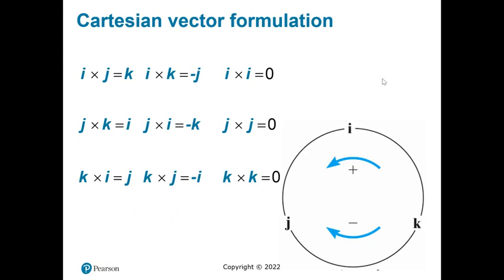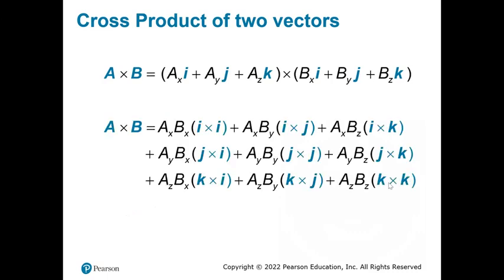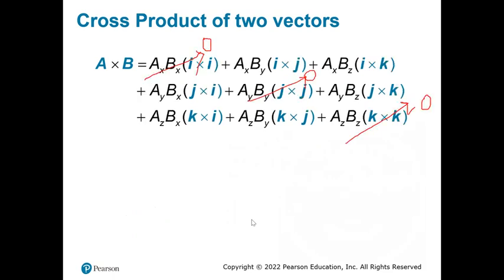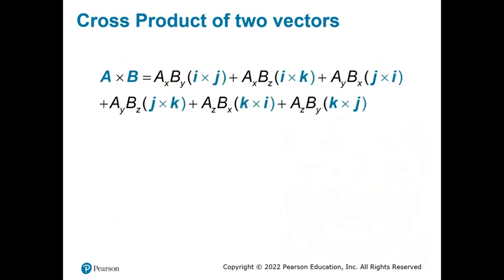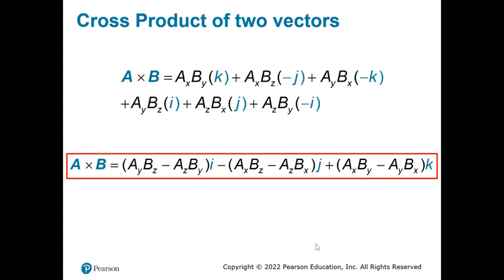The full Cartesian vector formulation of the cross product gives a detailed expansion. Multiplying the components and simplifying yields all the X, Y, and Z component terms of the resulting cross product vector.